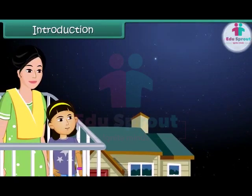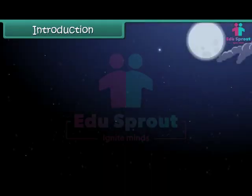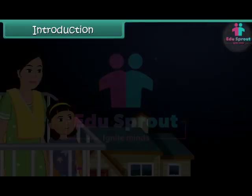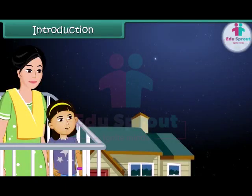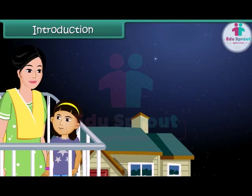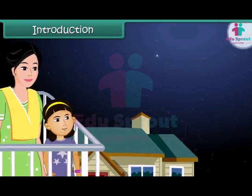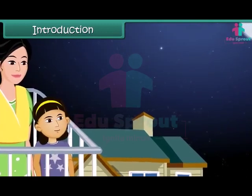Raveena likes watching the twinkling stars in the night sky. Today she notices a star that doesn't twinkle. She wonders if it is a special star and asks her mother. Her mother tells her that it is not a star but a planet. Raveena wants to know the difference between a star and a planet.